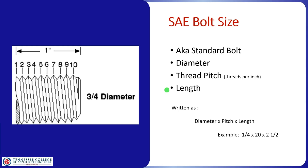When we write it, we usually write it in a form separated by X's: diameter X pitch X length. So an example would be a quarter-inch diameter bolt with a 20 thread pitch that is two and a half inches long — that would be written as quarter by 20 by two and a half.